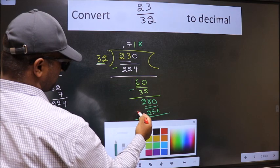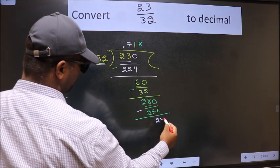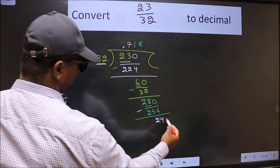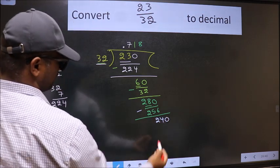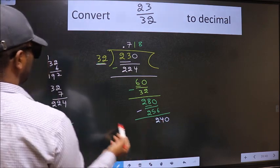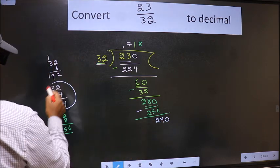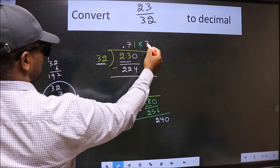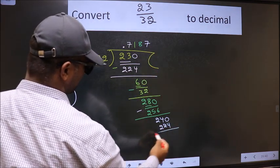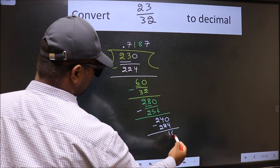Now we should subtract. We get 24. 24 is smaller than 32, and we already have decimal, so take 0. So 240. A number close to 240 in 32 table is this one: 32×7 is 224. Now we should subtract. We get 16.